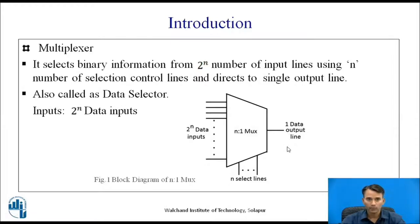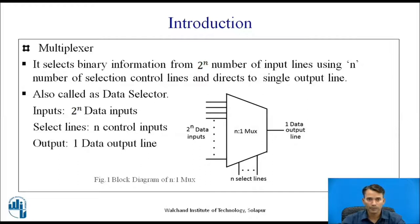Multiplexer is also known as a data selector. From the block diagram of an n-to-1 multiplexer, we can observe that there are 2 raised to n data inputs, n number of control inputs also known as select inputs, and one data output line.